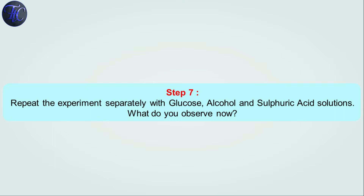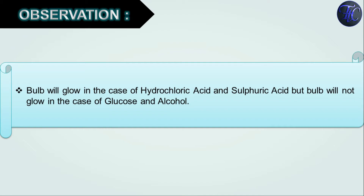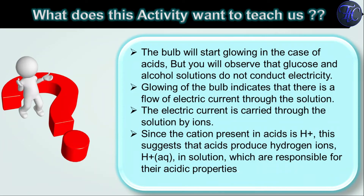Step 7: Repeat the experiment separately with glucose, alcohol, and sulfuric acid solution. Observations: the bulb will glow in the case of hydrochloric acid and sulfuric acid, but the bulb will not glow in the case of glucose and alcohol. The bulb starts glowing in the case of acids, but glucose and alcohol solutions do not conduct electricity.